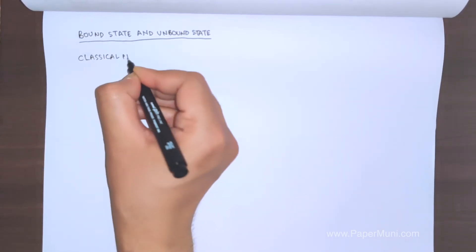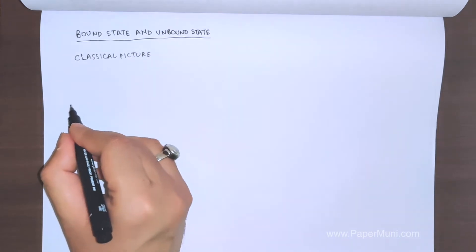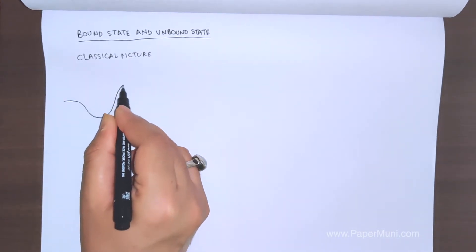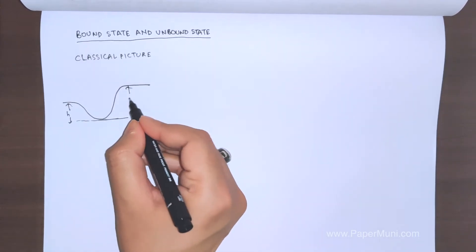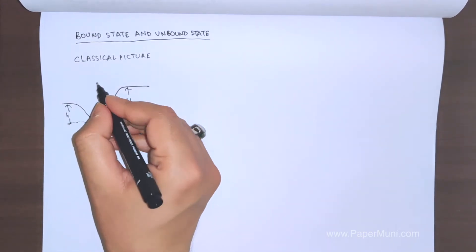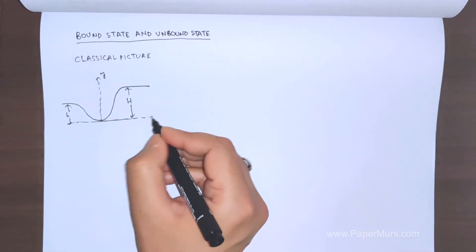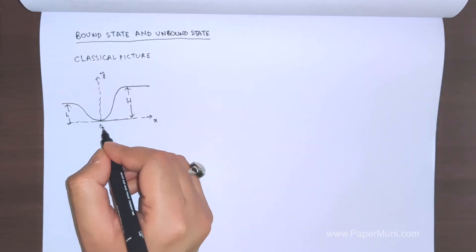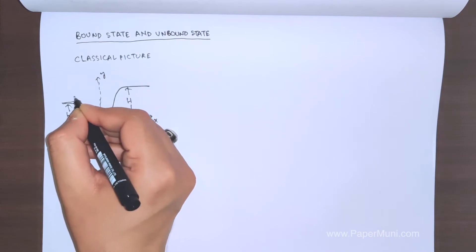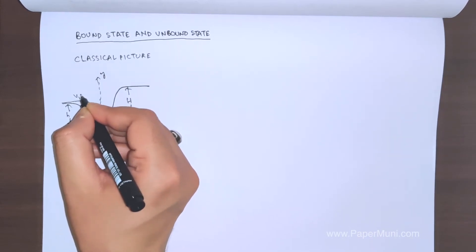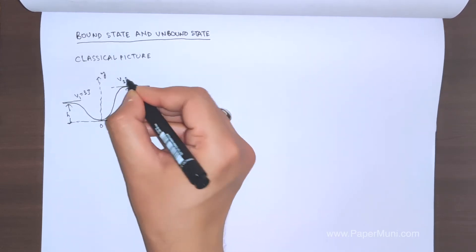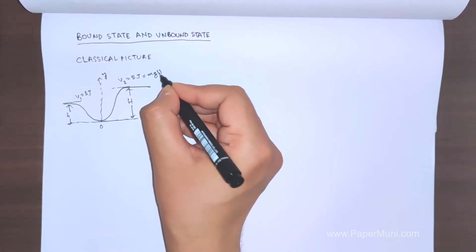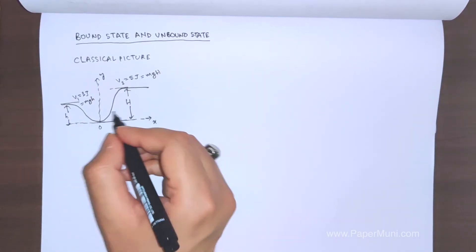When I say classical, it means not the quantum mechanical picture. If you have a physical hill, it looks like this. Say this is at height small h and this is at height capital H. We draw the axis: this gives you the height and this is the distance from this point. The potential energy is given by mgh, so this is mgh at small h, say three joules, and mgh at capital H, say five joules.